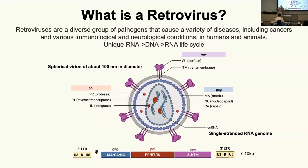You should make that core, so it has the matrix, the capsid, the nucleocapsid, and these are the parts of the virus that protect the DNA or the RNA, and pack the RNA.